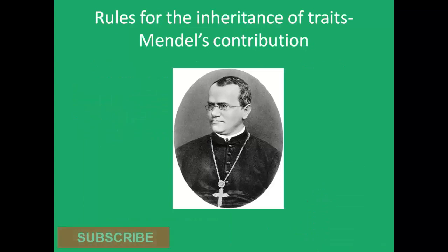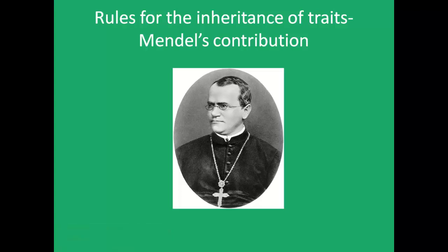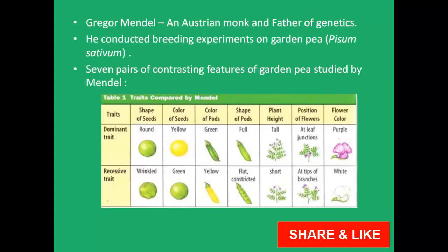Rules for the inheritance of traits — Mendel's contribution. The basic principles of genetics were discovered for the first time by Gregor Mendel. Gregor Mendel was not primarily a biologist but an Austrian monk. He published the result of his meticulous work in 1866, but its significance was not realized till 1900. Today Mendel is considered to be the father of genetics. Mendel was keenly interested in plant breeding and conducted breeding experiments on garden pea, Pisum sativum. He selected seven distinct traits from 34 varieties of garden pea.